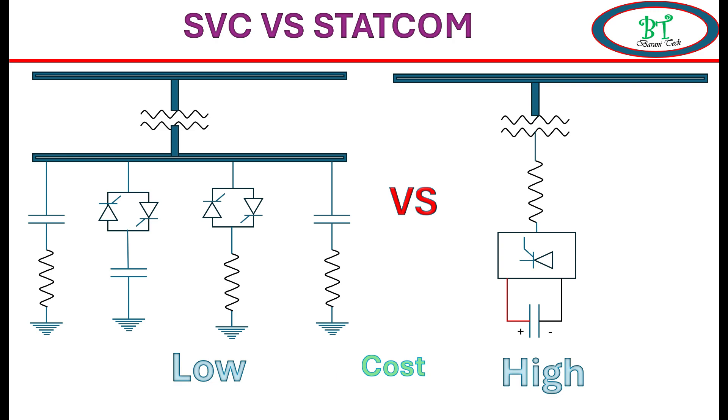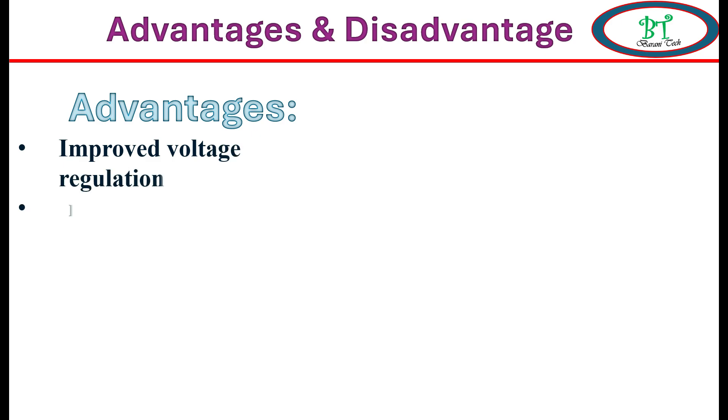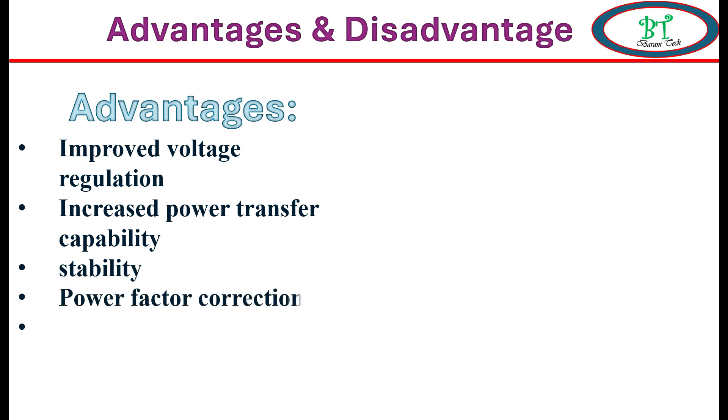Now we will see the advantages and disadvantages of the compensator. The advantages are: it improves voltage regulation, increases power transfer capacity, improves power system stability, and power factor correction is also done automatically. Due to maintaining the power factor, it reduces losses also.